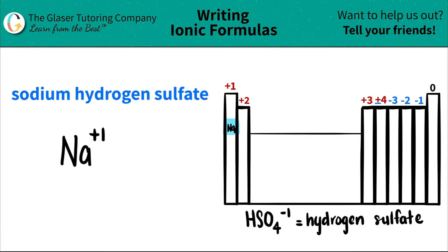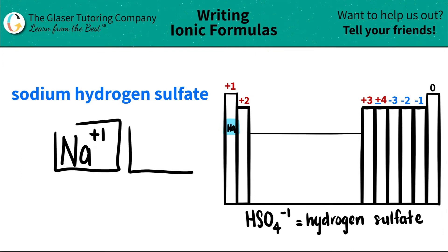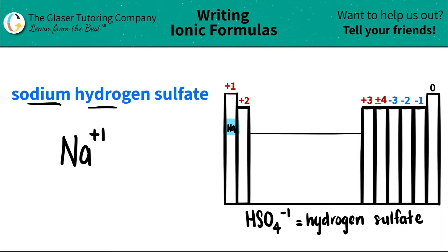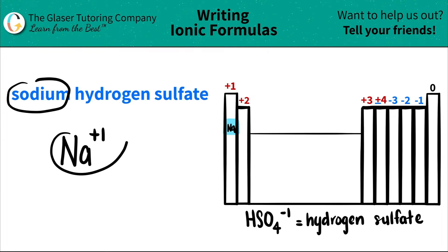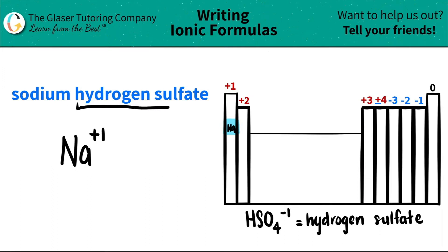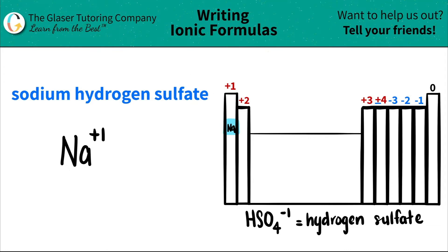Now, here's the thing. Remember, ionic compounds always have two components to them. But in this case we have three different words. So that means if I use sodium for one component, hydrogen sulfate should all be clumped together as one thing. And I look at the ending — I see that it's an ATE ending, and all ATE endings are polyatomic ions.